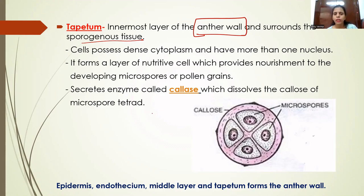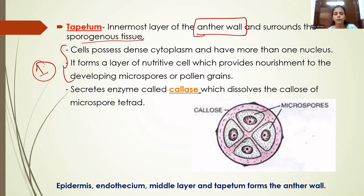The tapetum layer is nutritive in function. It forms a layer of nutritive cells that provide nourishment to the developing microspores or pollen grains inside the microsporangia. This is the first function of tapetum — these cells are nutritive in nature and provide nourishment to developing microspores.